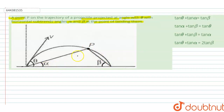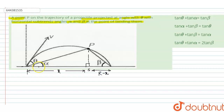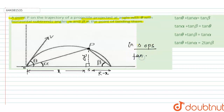Let us draw a triangle with a perpendicular. Consider a point S, and let this length be x. Then this distance is r minus x, where r is the whole distance, and y is the vertical distance when the particle is at position P. In triangle OPS, we consider the relevant trigonometric ratios.